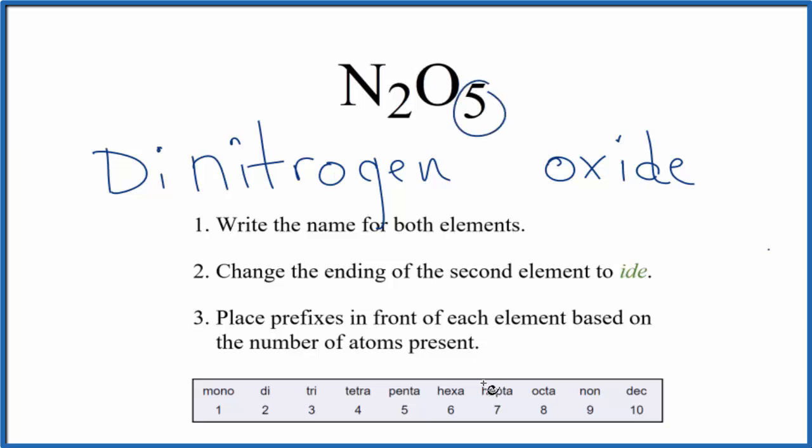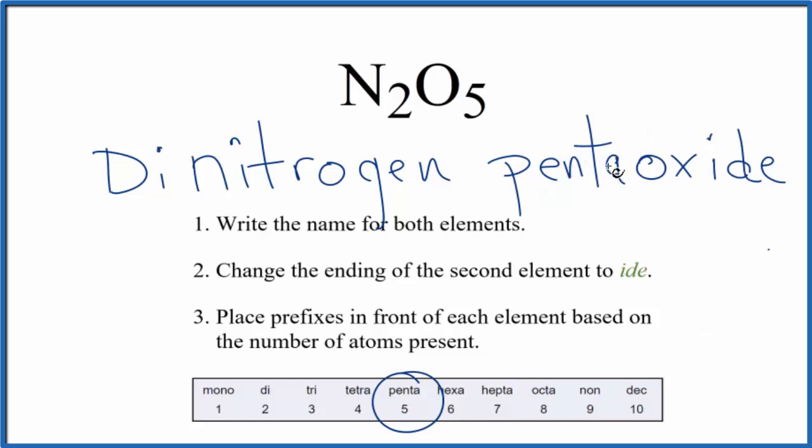and then five for the oxygen. That's penta. We get rid of the A. We don't like to have those two vowels next to each other.